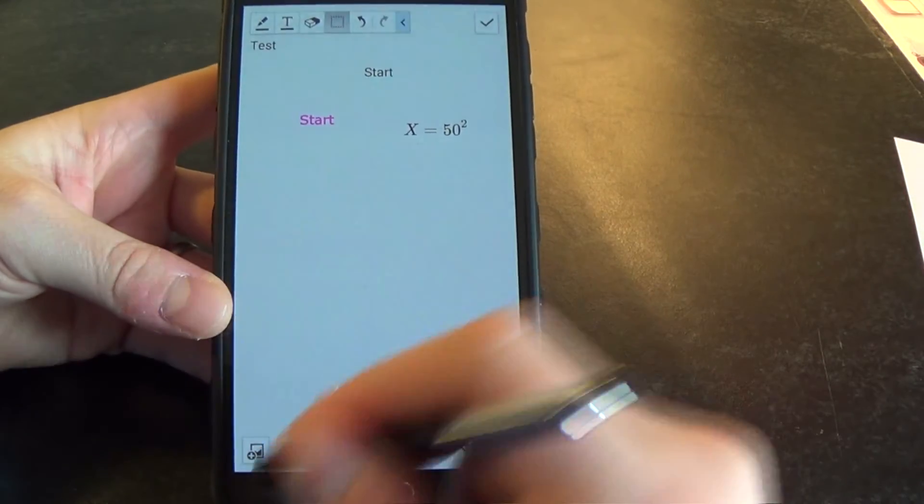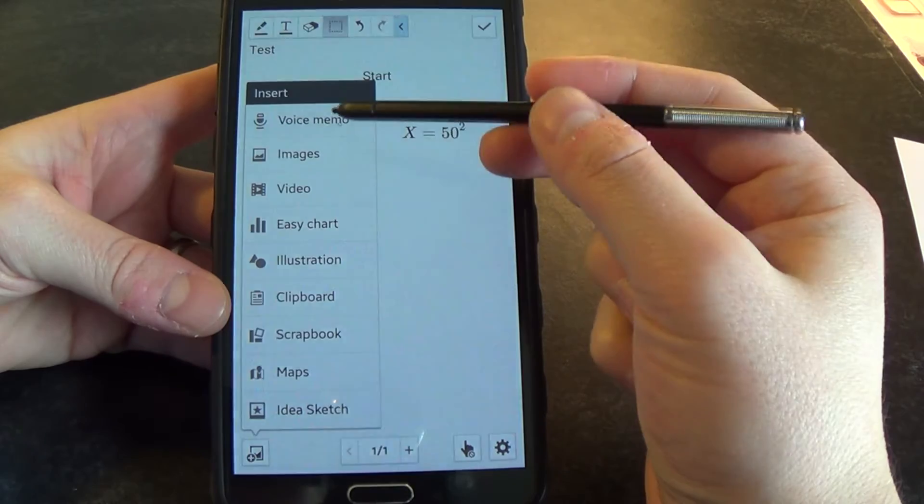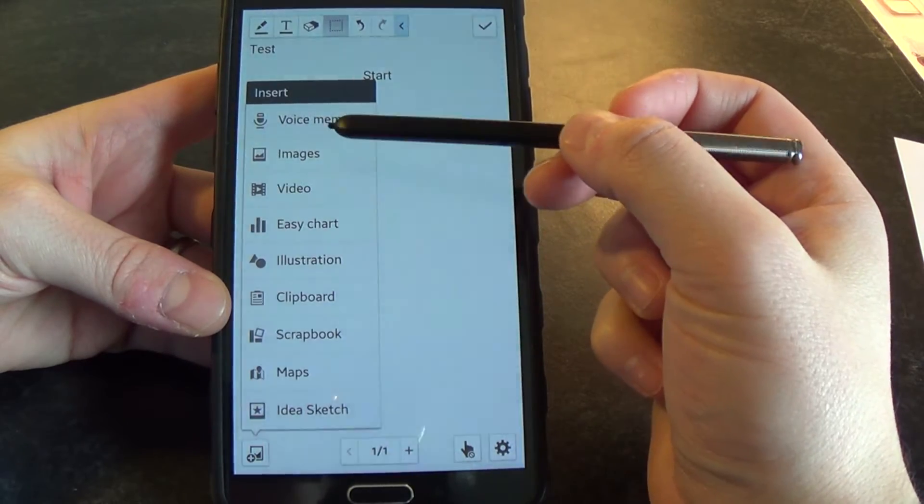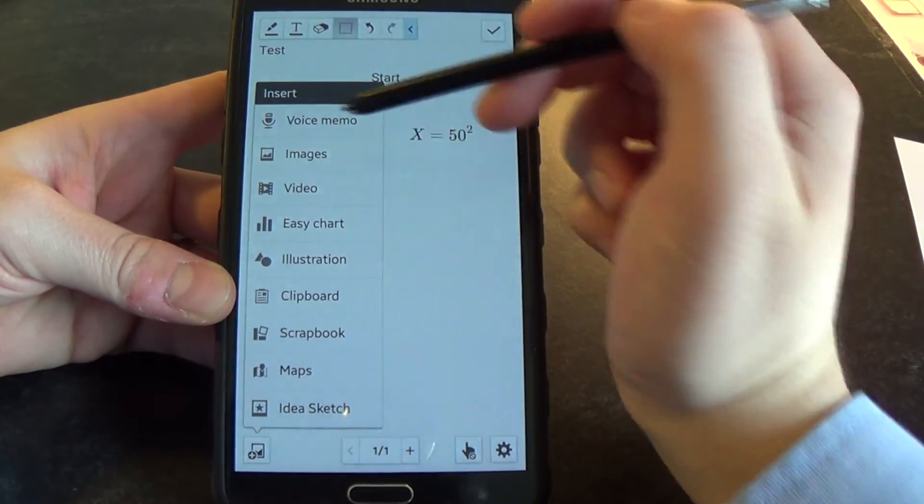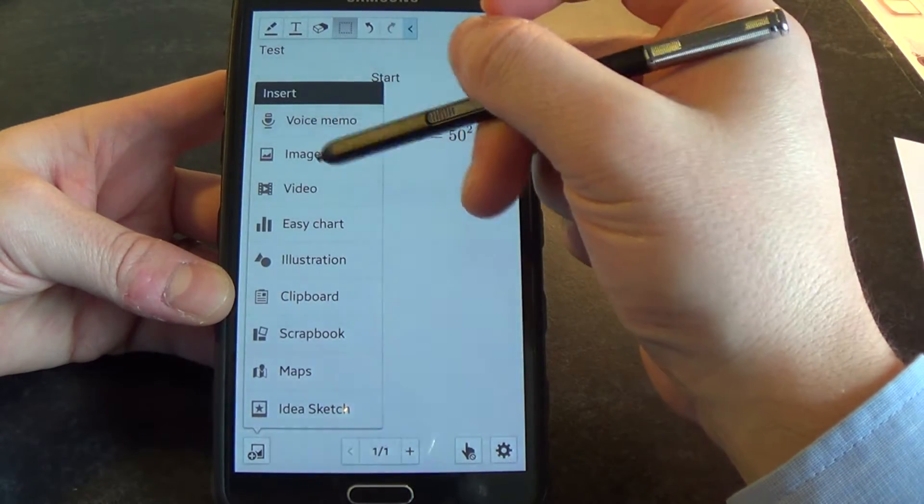Something else I use a lot is this. Down here at the bottom you can insert. So you can insert a voice memo, which I generally don't use that often. Images is handy because you can bring in a photograph and then draw on that photograph.